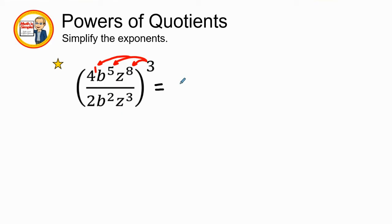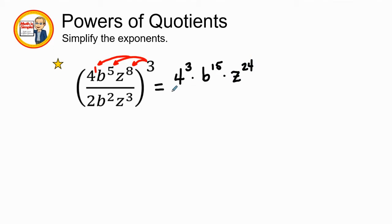So in this example, using the power to quotient rule, we are going to have four to the first times three, which is going to be four to the third power, times b to the 15th power, times z to the 24th power. Now we're going to distribute to the denominator as well, so this is going to be two to the first power.